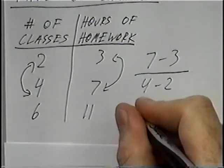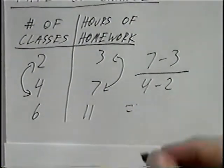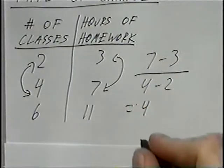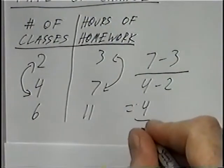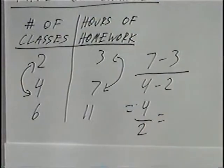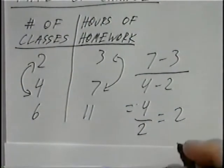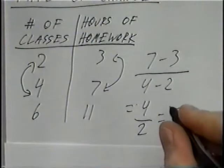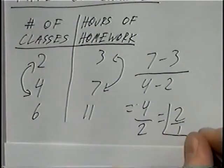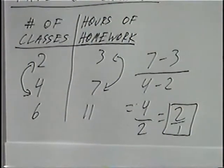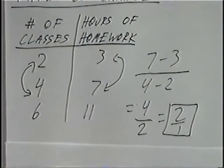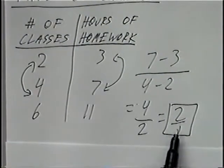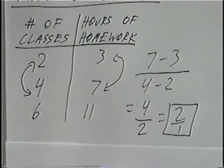Simplifying this fraction: seven minus three equals four, and four minus two equals two. So four divided by two gives us a rate of change of two, or you can write it as the fraction two over one. Two over one means for every one class, we have two hours of homework.